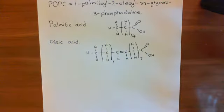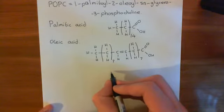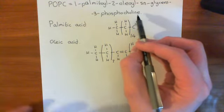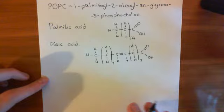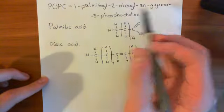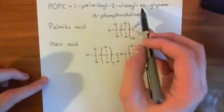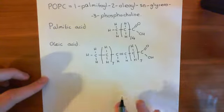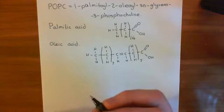What we're going to do is take a glycerol molecule and add on a palmitic acid group, an oleoyl group, and then a phosphocholine on the third hydroxyl group. The SN just refers to the optical isomer. Let's first discuss what phosphocholine is, starting with what choline is.